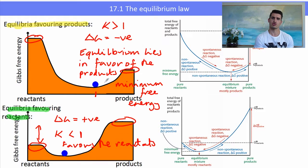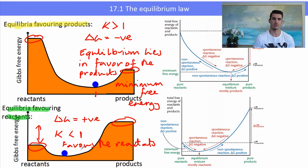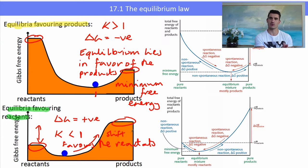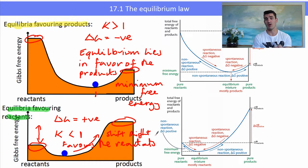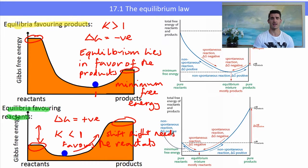If we were to try and get this reaction to go in the forward direction from reactants to products, we would have to include some energy. The only way to turn the reactants into the products is to give it energy, which is why equilibrium reactions with a K value less than one are usually endothermic reactions.